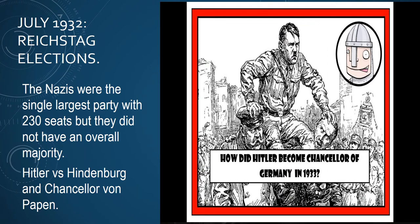July 1932, Reichstag Elections. The Nazis were the single largest party with 230 seats, but they did not have an overall majority. Hitler versus Hindenburg and Chancellor von Papen. In this poster you can see Hitler on top of Hindenburg and von Papen. There are two interpretations here: does it show Hitler pressing down and controlling von Papen and Hindenburg? Or is it saying that without these two men holding Hitler up, he would be nowhere? We need to find it out.